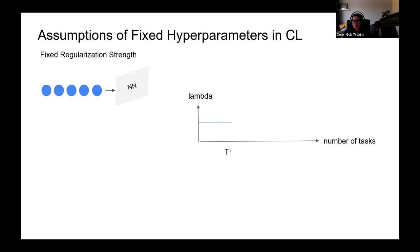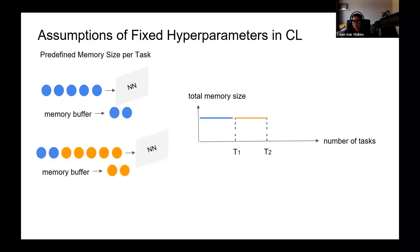Similarly, traditional regularization-based methods often assume fixed values for the regularization hyperparameter across all tasks. This assumption implies that the regularization strength chosen during model training remains constant and optimal for all subsequent tasks. Many memory-based approaches assume a predefined memory size per task. This implies that a fixed number of samples or experiences from a task are stored for future reference.